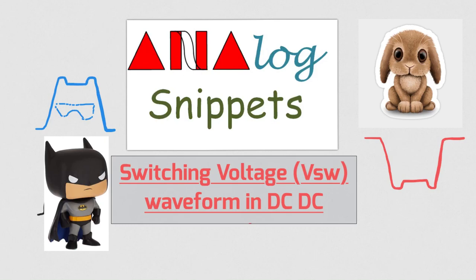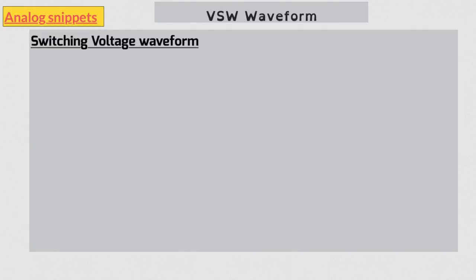Hello everyone. Welcome back to analog snippets. In the last video we discussed the waveform of inductor current in a switching converter. In this video we will continue the theme and will look at another important waveform, the waveform of the switching voltage.